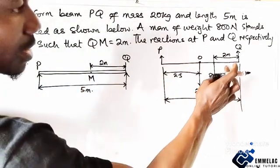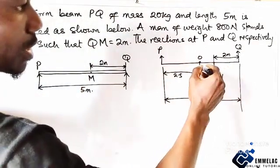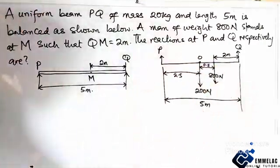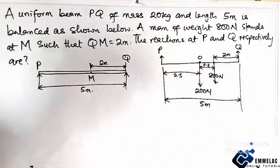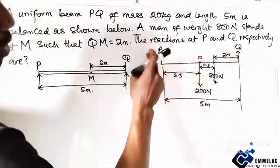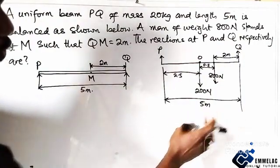And if here is 2, automatically here is 0.5. So which means from here, we can now resolve that the upward force is equal to the downward force.